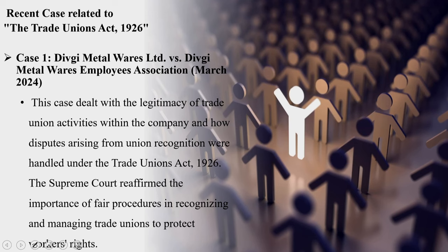The industrial tribunal initially rejected the references filed by the workmen regarding the transfers. The case escalated through various legal channels including a writ petition filed by the company. When we look into the timeline, the case heavily relied on certified standing orders, particularly Clause 20, which allowed for employee transfers within the company. The terms of appointment explicitly stated that employee services were transferable to any department or office of the company.